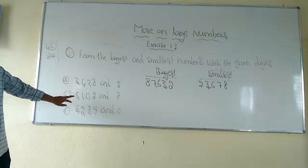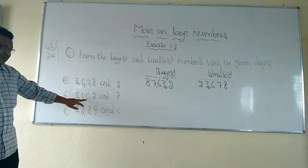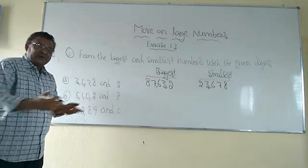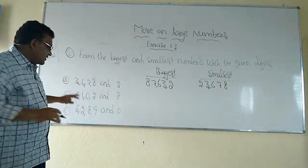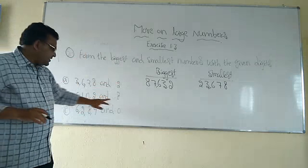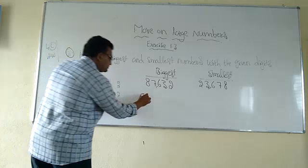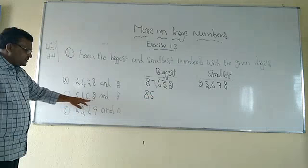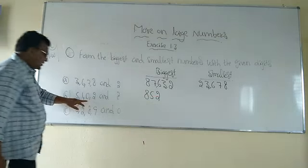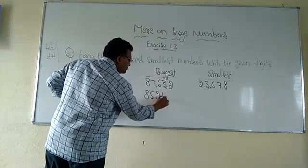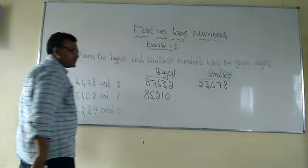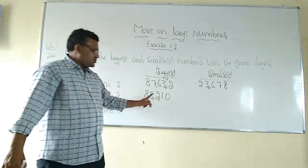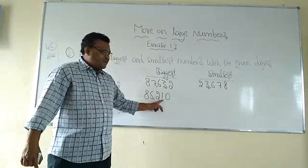Next example — here, zero is also one of the digits. When writing the biggest number, no problem — same rule applies. The first digit is the biggest one: eight, then five, then two, then one, then zero. Separate them using commas: 85,210. Count the digits: one, two, three, four, five — yes, all five digits are used.